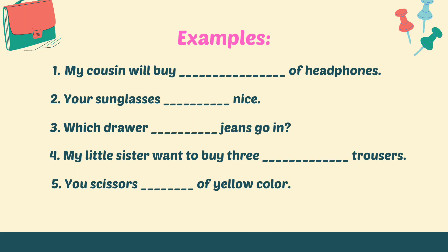So now here I have brought some examples. Look at the first example: My cousin will buy a pair of headphones. The second example: Your sunglasses — are or is — nice? Because sunglasses are in plural form, we use 'are.' We cannot use 'is' because this is not a singular form. Sunglasses is always in plural form, so we use 'are.' Your sunglasses are nice.